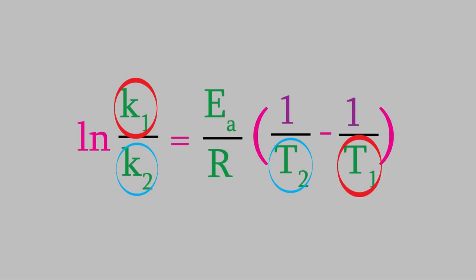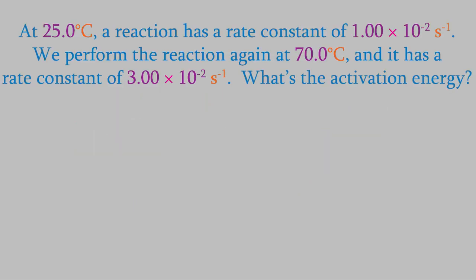Let's try an example. Suppose we perform a reaction at 25.0 degrees C, and it has a rate constant of 1.00 times 10 to the minus 2 seconds to the minus 1. Then we perform it again at 70.0 degrees C, and find out that it's faster, and now it has a rate constant of 3.00 times 10 to the minus 2 seconds to the minus 1. What's the activation energy of this reaction?